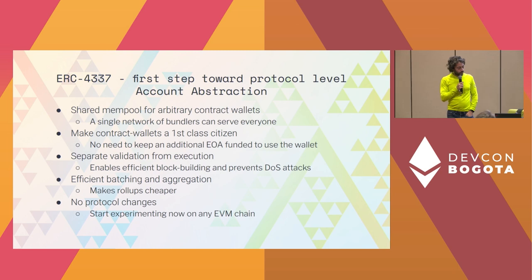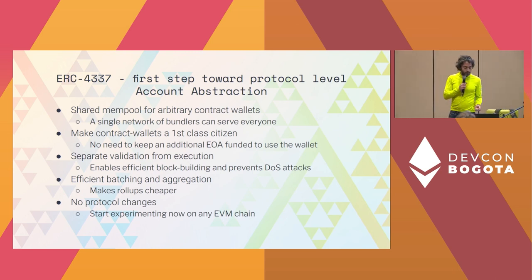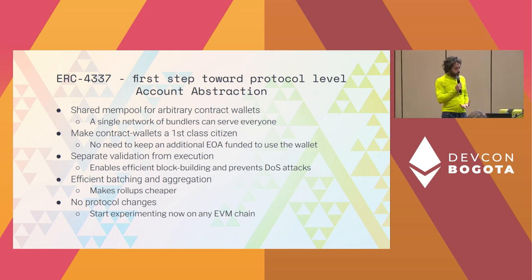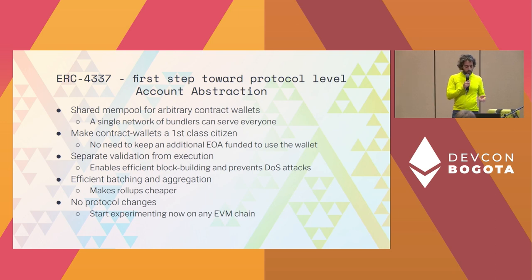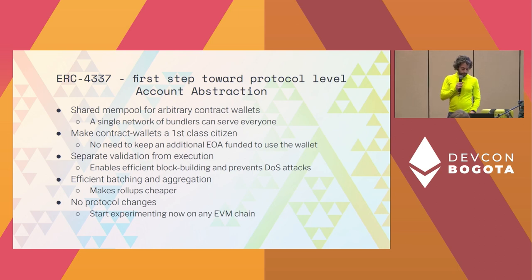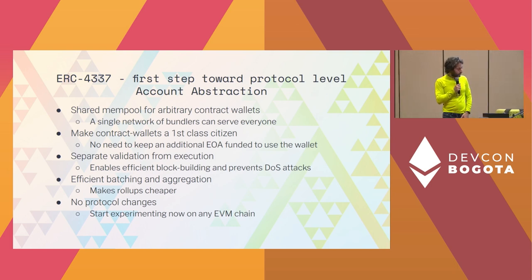With ERC 4337, once we have this scheme, we can also use it to make rollups cheaper, because you can batch transactions and aggregate signatures. It doesn't require any protocol changes, so on any EVM-compatible chain we can start experimenting with this.